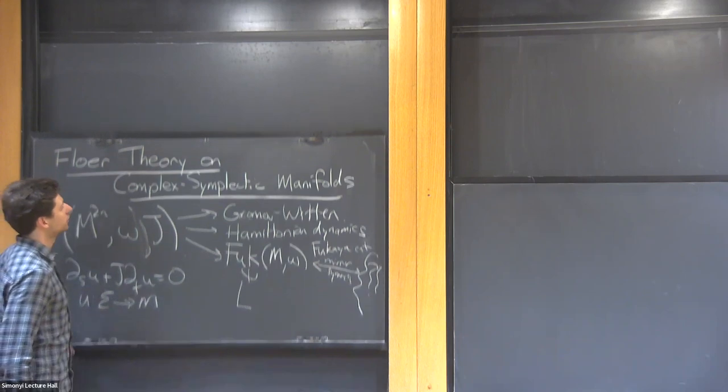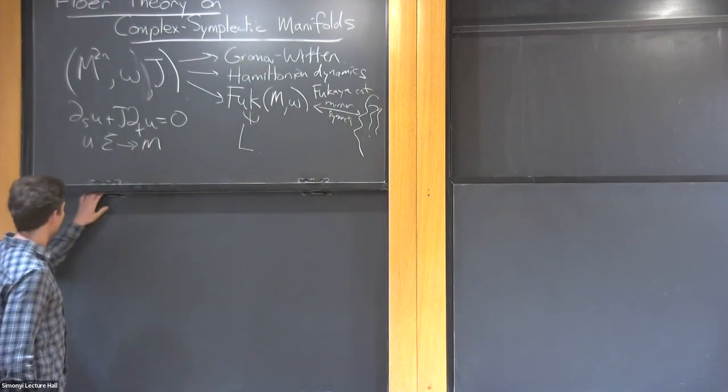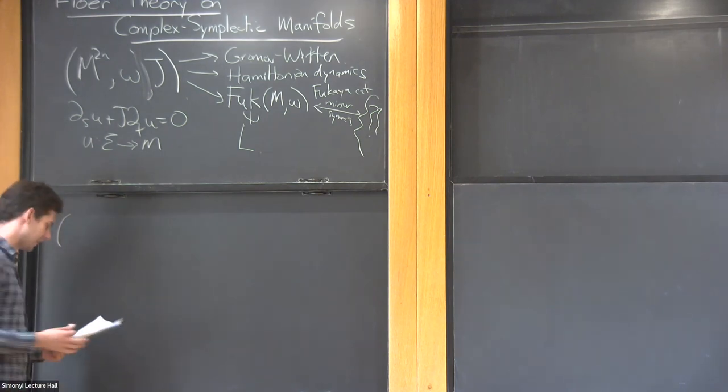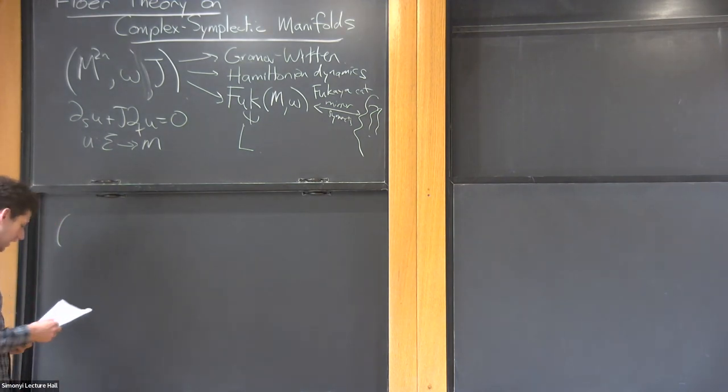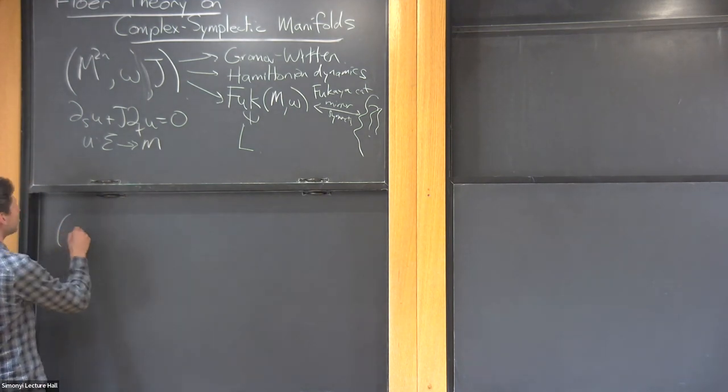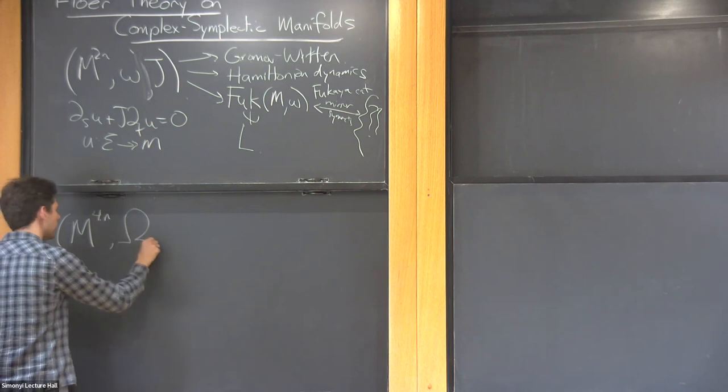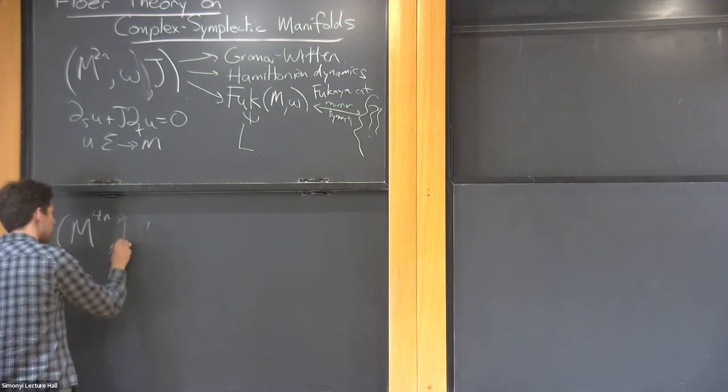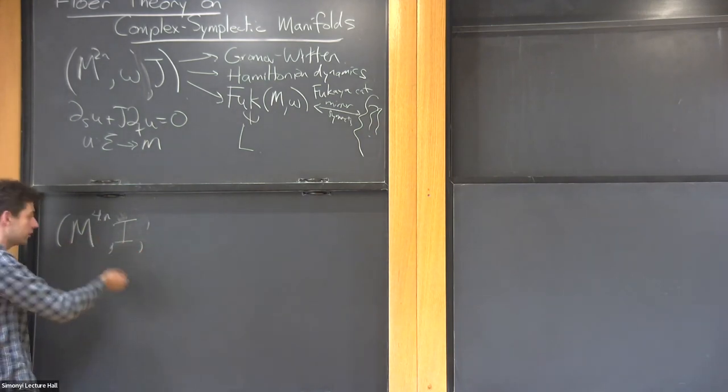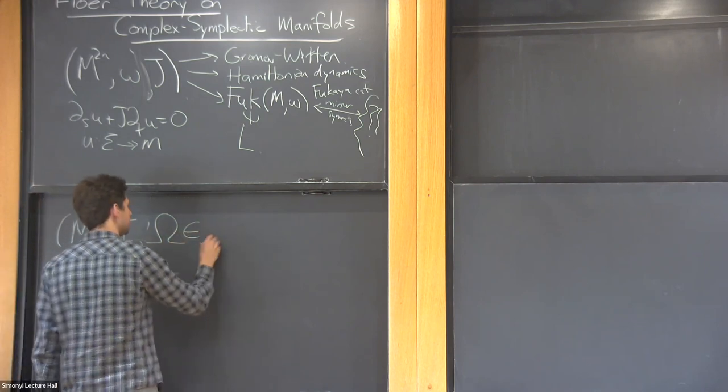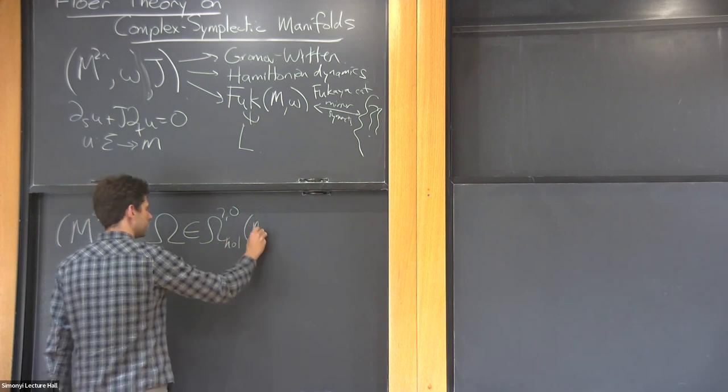At some point I became curious about what happens if you try to complexify every possible object of the story and see what you get. It's hard to complexify Hamiltonian dynamics, but a lot of the other things have interesting complexifications. First of all, we have to complexify the underlying data. We want a 4n-dimensional manifold with a complex symplectic form, which means we have some preferred complex structure on the manifold, so it's actually a complex manifold with a holomorphic two-zero form which is not degenerate.